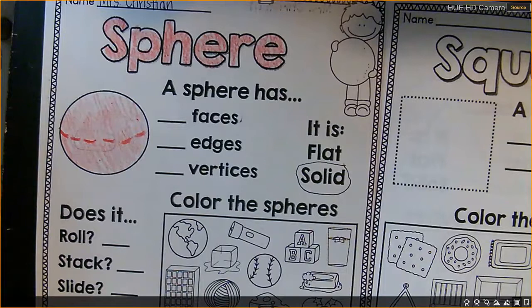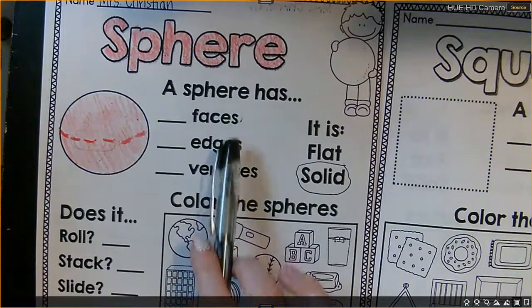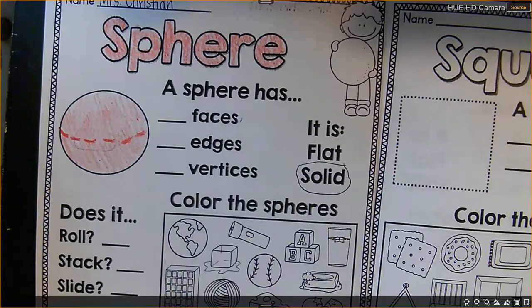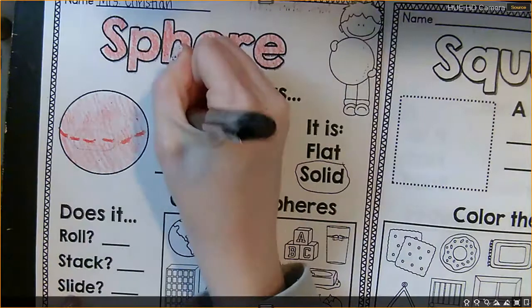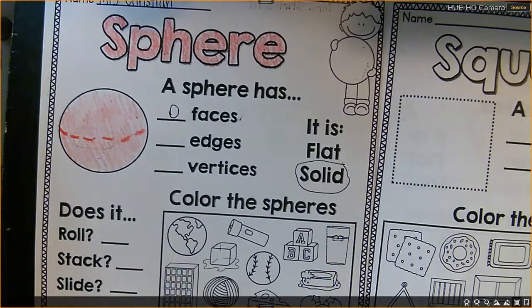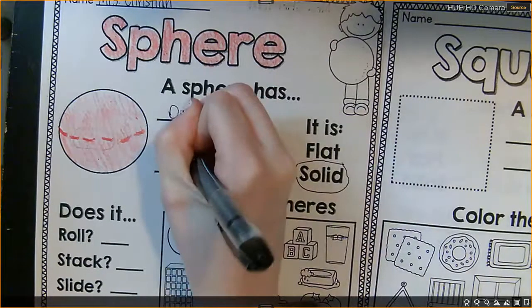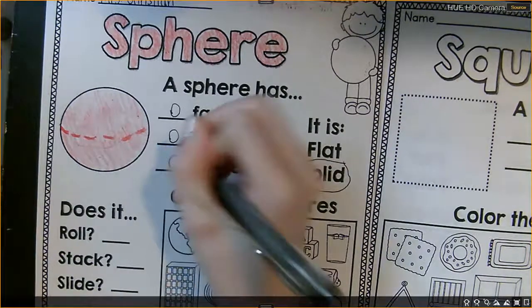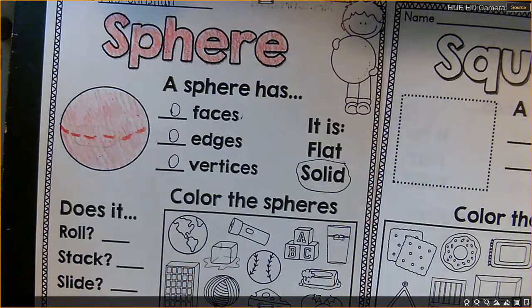And now we're going to talk about the language that we use for 3D shapes. For 3D shapes, we no longer use the word sides or corners. Edges are like the line between the two points, the vertices. So on a sphere, a sphere has zero faces, zero flat pieces on it. It has zero edges and it has zero vertices. So it's kind of like a circle. It has zero of everything.